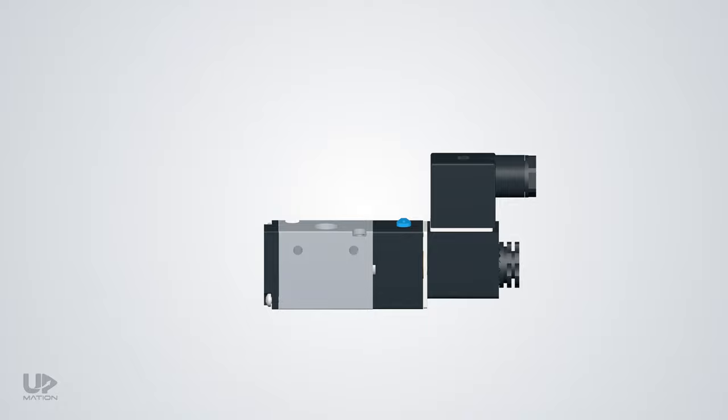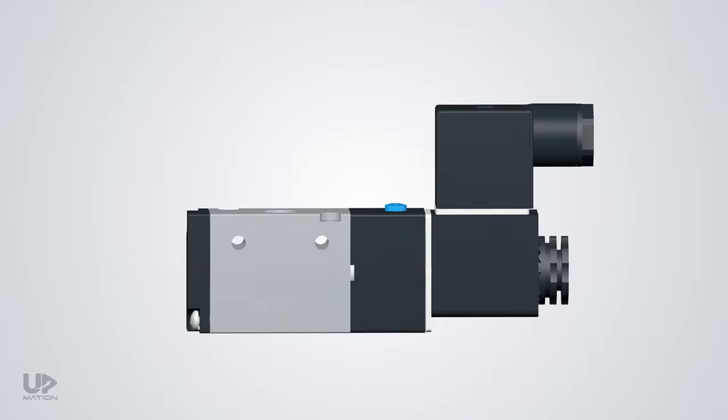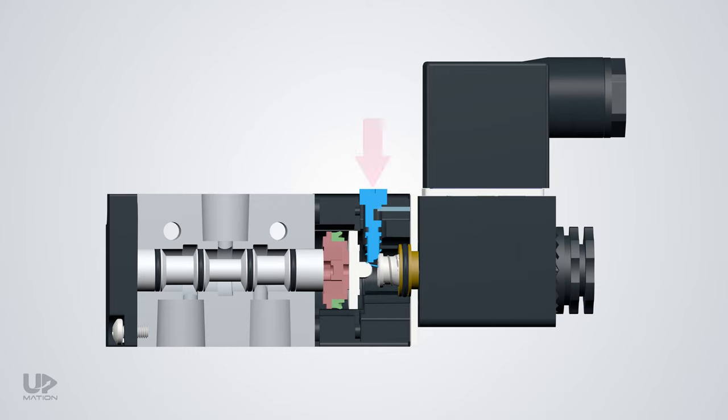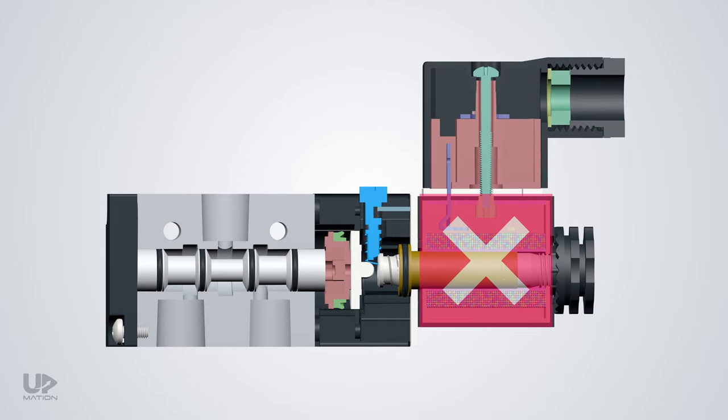In solenoid valves, you might also see a small button on the valve known as manual override or mechanical override. That is used in case of troubleshooting for locally testing the valve's mechanism without connecting the electrical voltage to the solenoid. Just be sure to use it while the solenoid operators are not energized, especially one on the opposite side. And if so happens, the solenoid will break.